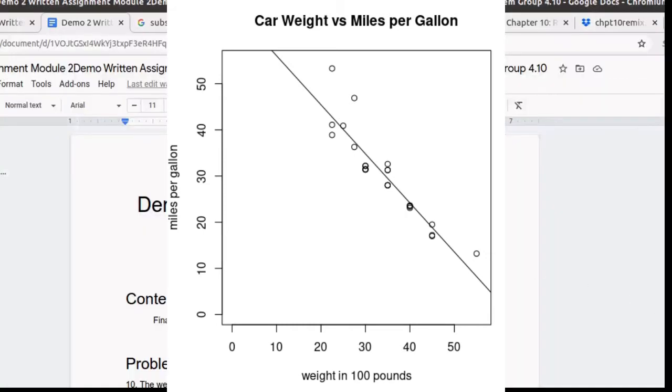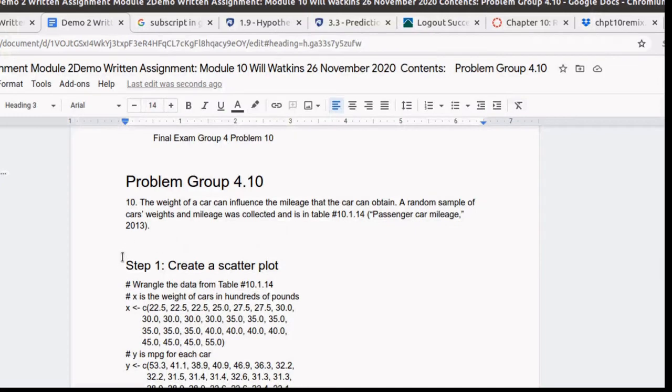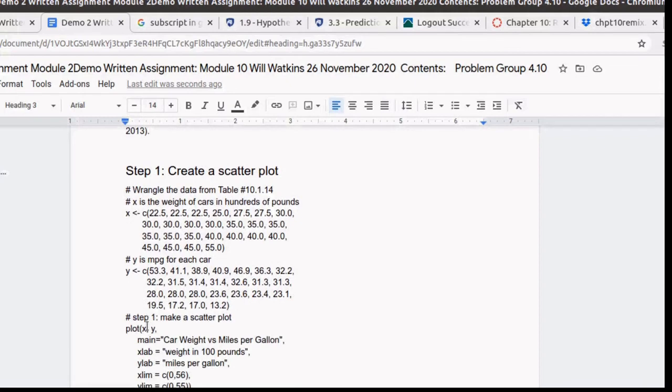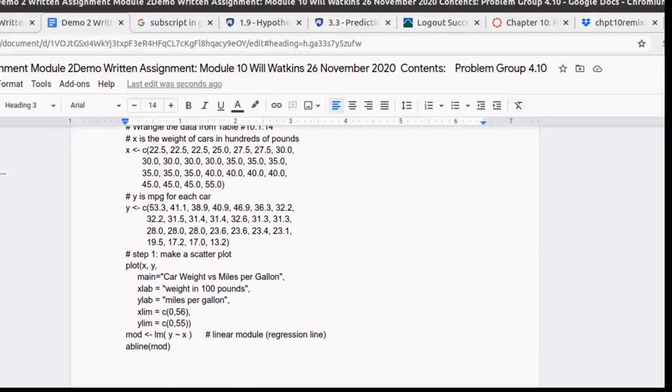So let's return to our write-up. And so I'm showing my reviewer that we're doing step one, which was to create a scatter plot. And then I'm documenting the things that are happening here. x is going to be the weight of cars in hundreds of pounds. That's important to notice. And y is going to be the miles per gallon for each car. And we've mung those two vectors. And then here's step one where we're actually plotting that vector in the AB line.